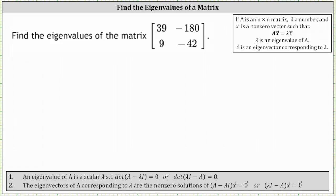We'll find the eigenvalues of the given two by two matrix. The eigenvalues are the values of lambda that are solutions to the equation: the determinant of the difference of matrix A and the product of lambda and the identity matrix equals zero.